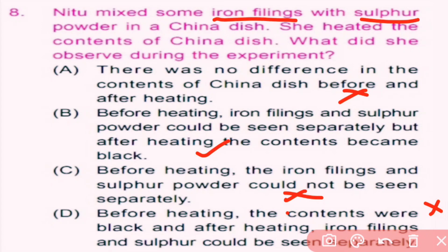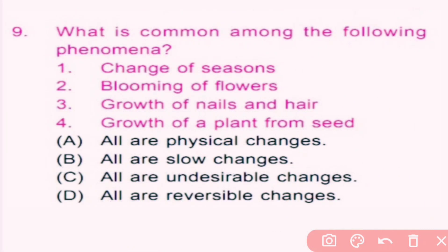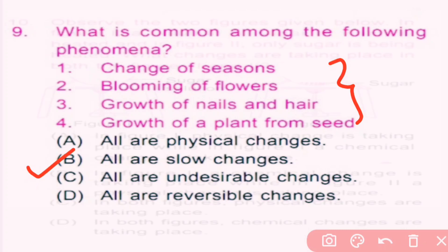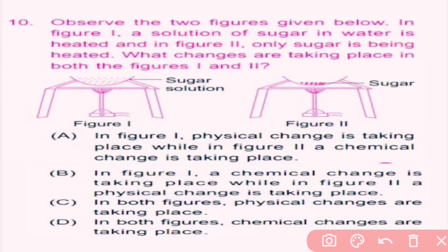Question number nine: what is common amongst the following phenomena? One: change of season. Two: blooming of flowers. Three: growth of nails and hair. Four: growth of a plant from seed. Option A — all are physical changes. Option B — all are slow changes. Option C — all are undesirable changes. Option D — all are reversible changes. These are all slow changes, so option B is correct.